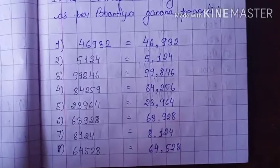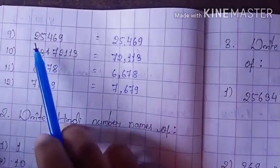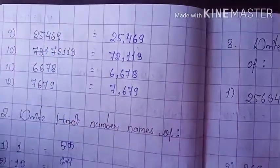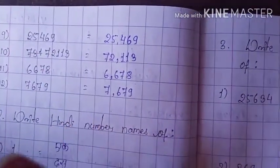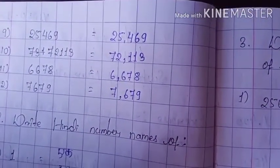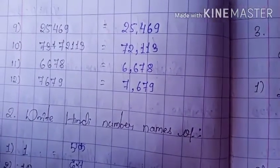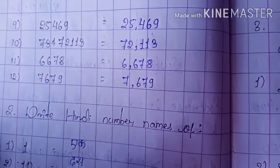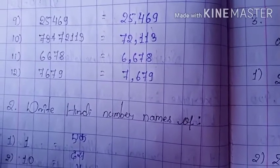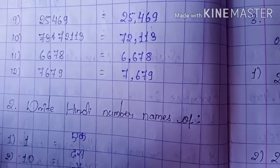Next example: 2425469. We write it as 24,25,469 — placing commas: 2, 5, comma, 4, 6, 9. The rest of this question you have to solve yourself. Watch this video and write the answers in your copy.